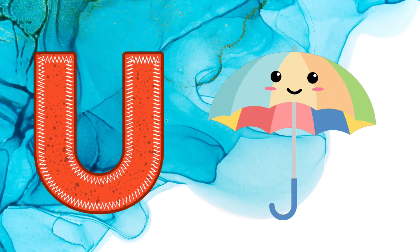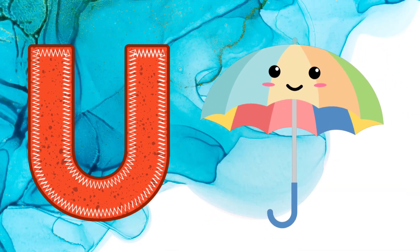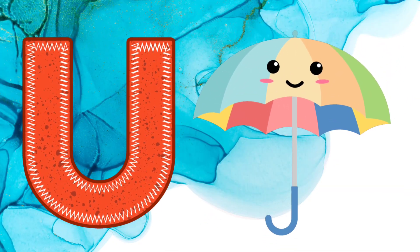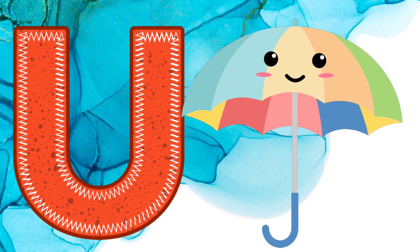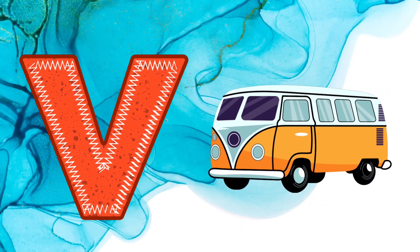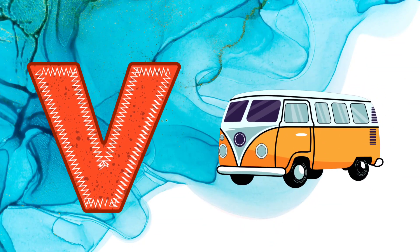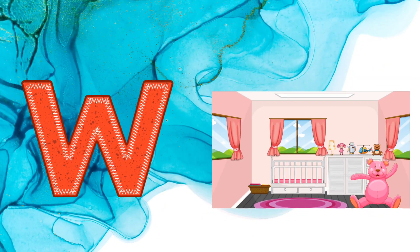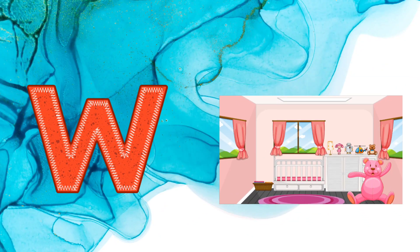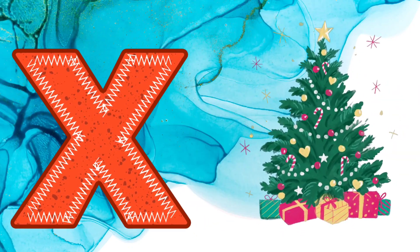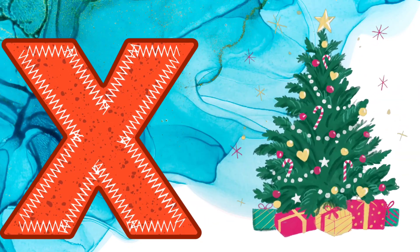U is for Umbrella. V is for Van. W is for Window. X is for Xmas.